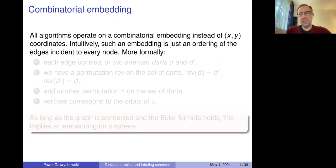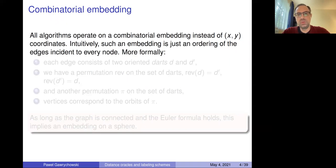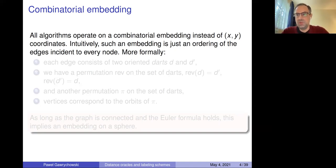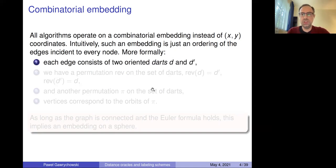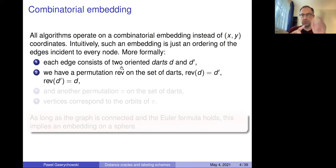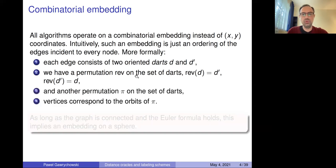The algorithms I'm going to present can all be implemented by operating on what's known as a combinatorial embedding — so there are no points, no coordinates. Such an embedding is just an orientation of edges incident to each node: you have a node, all the edges around it, and a clockwise orientation of those edges. More formally, each edge consists of two darts in both directions; one permutation reverses the dart to pair them up, and the other permutation allows you to go around a node. It's really just two permutations that define the whole embedding.